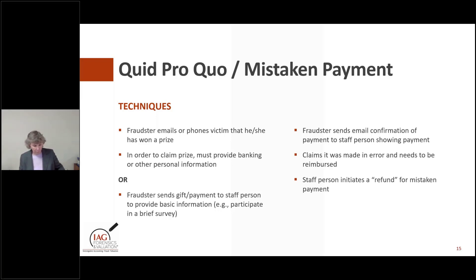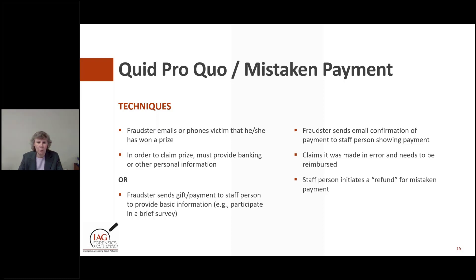With regard to quid pro quo or mistaken payment, this is a situation where somebody sends you money or offers you something and then tries to get you to pay them back in return. There are examples where you might be able to claim a prize, but you have to provide information. You're either going to pay a small amount to get something big, or provide personal or banking information from the local government to claim a refund.